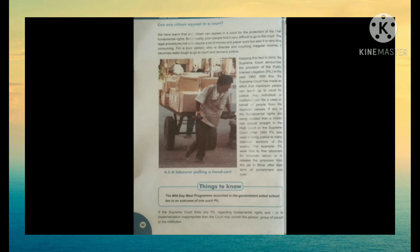Keeping this fact in mind, the Supreme Court announced the provision of Public Interest Litigation, that is PIL. It was started in the year 1980. With this, the Supreme Court made an effort so that the maximum number of people can reach the court for justice. The Supreme Court allows poor people especially to go to a lower court or a joint body working near the Supreme Court and appeal their cases. So if any person's fundamental rights are violated, the High Court or Supreme Court, after receiving the PIL under the act of 1980, can proceed with it through a group of judges.